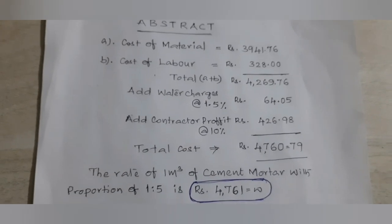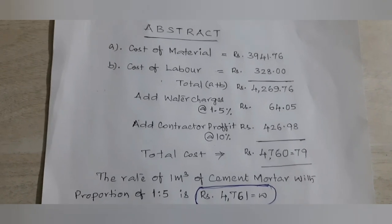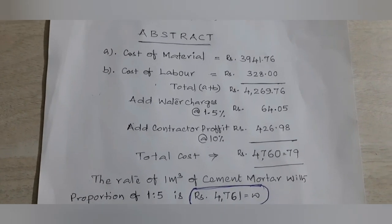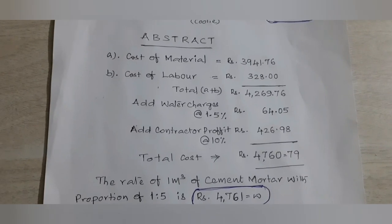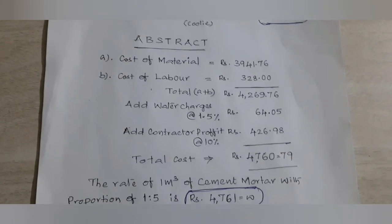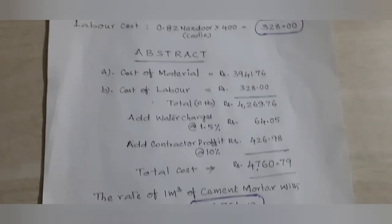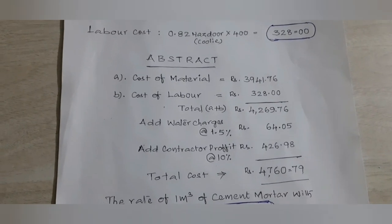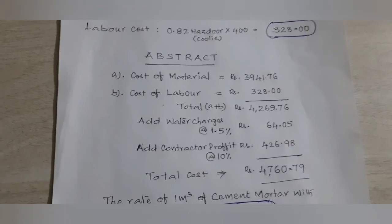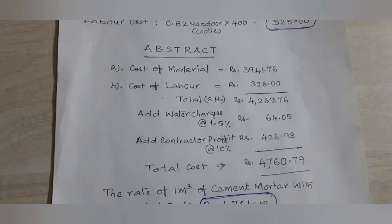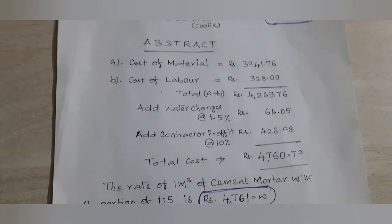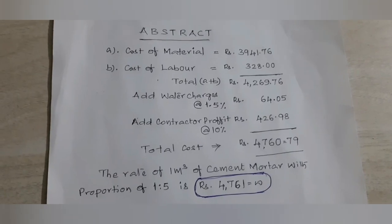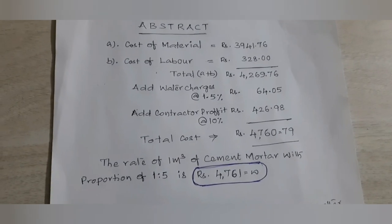This is the rate analysis process for cement mortar with a 1:5 proportion. The rates may vary from place to place due to variation in local rates. The process remains the same anywhere, but you should input the current local rates to arrive at the correct amount. Thank you very much.